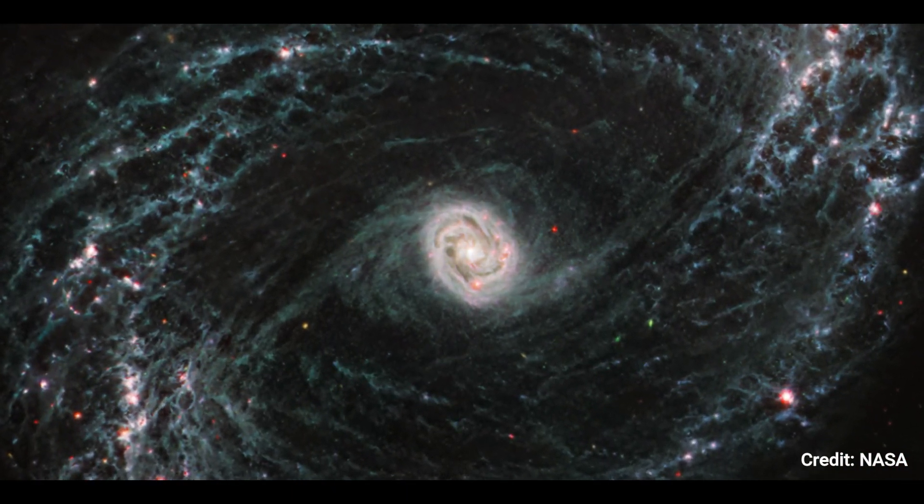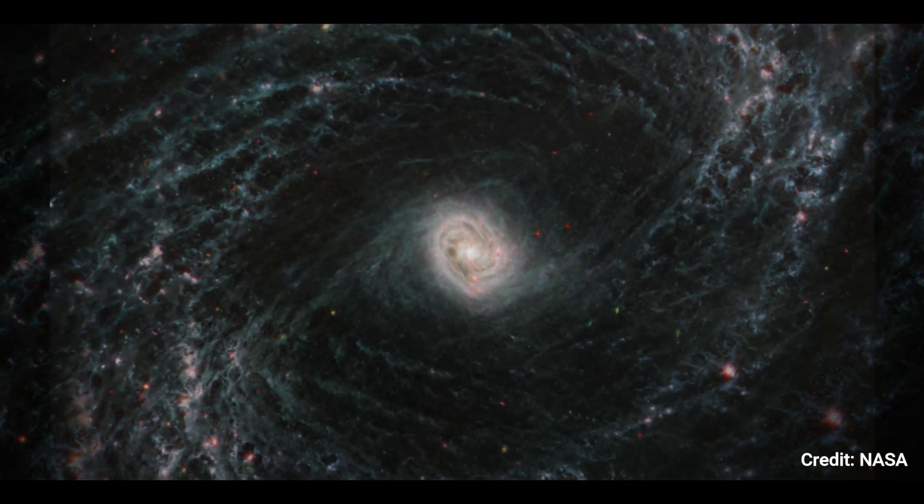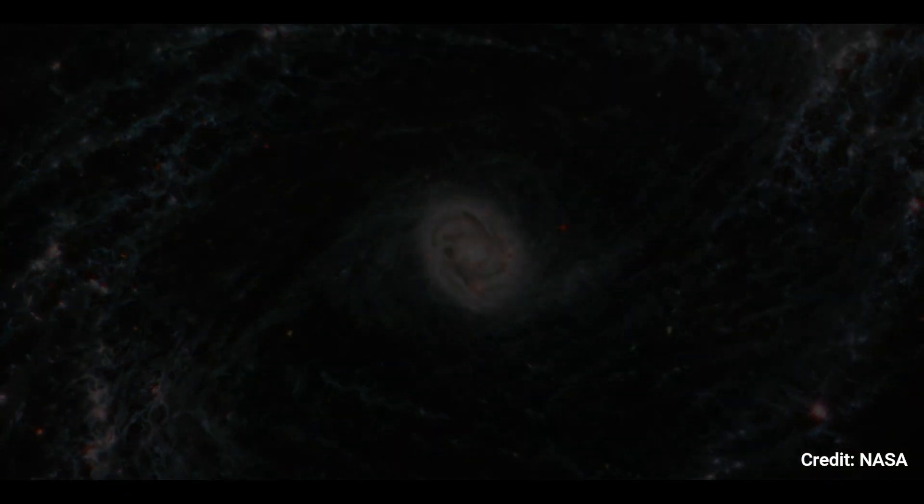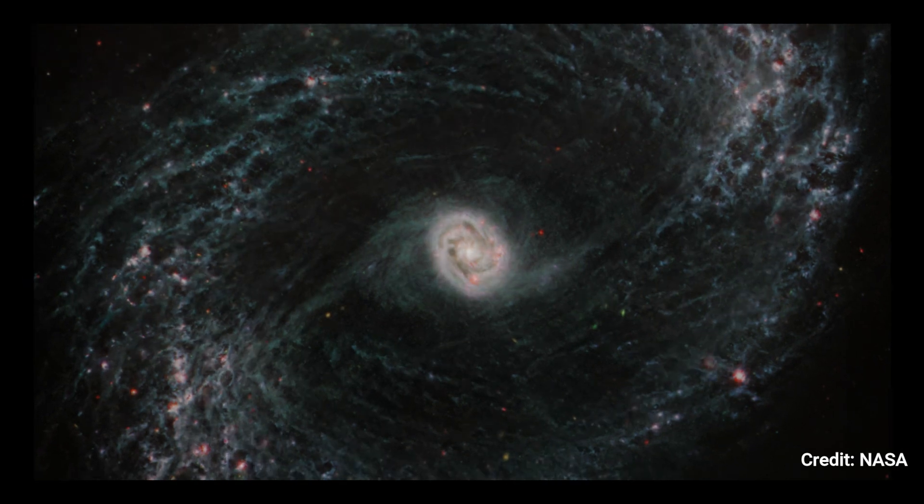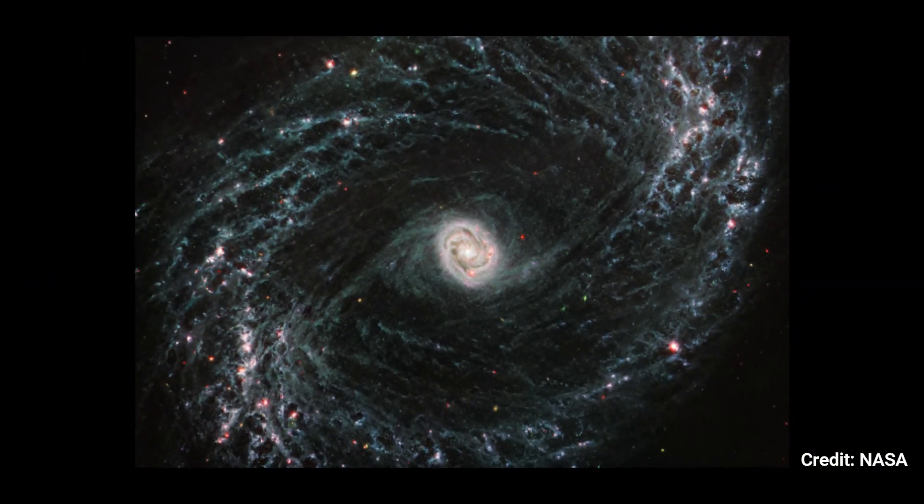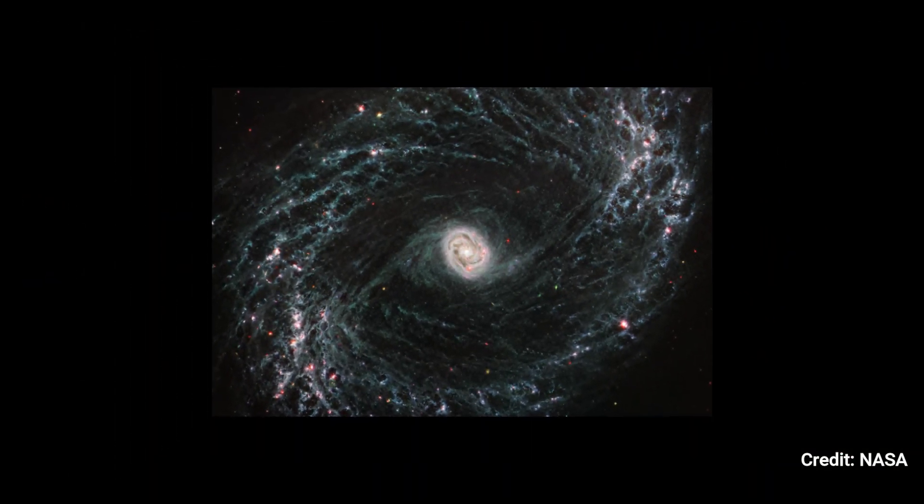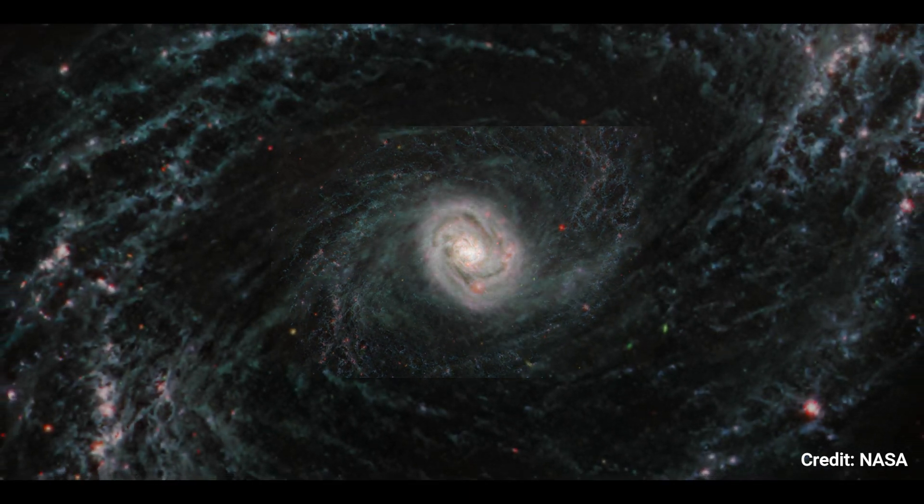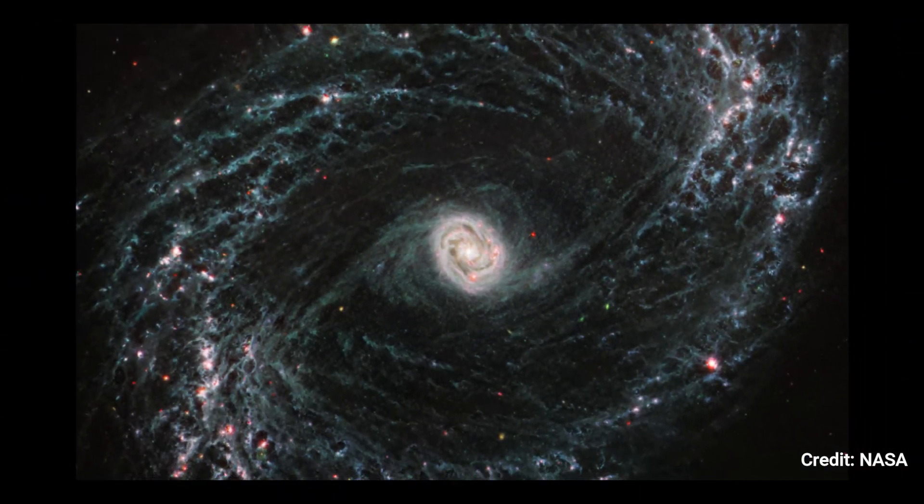With Webb's extraordinary resolution, a tight, brilliant core with a distinctive double ring structure sparkles in exquisite detail near the galaxy's center. The double ring in this case is really tightly wrapped spiral arms that wound into an oval form along the galaxy's bar.